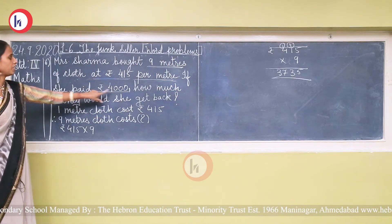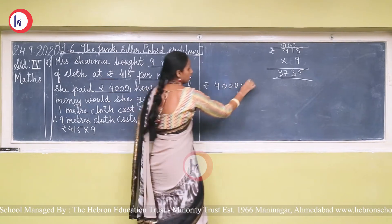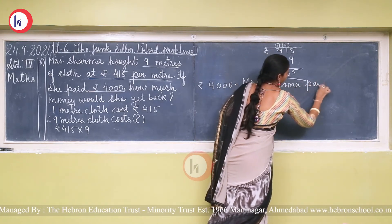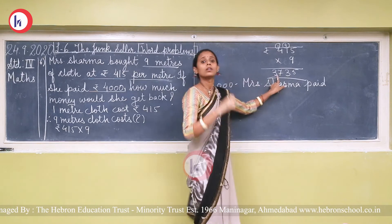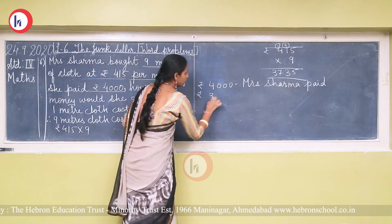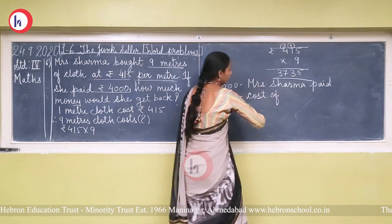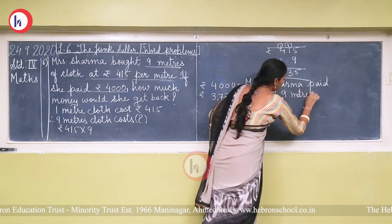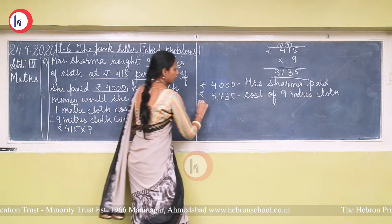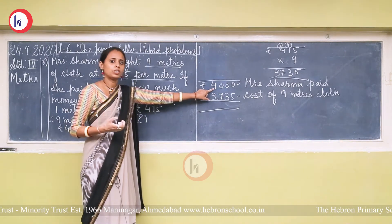Mrs. Sharma paid rupees 4000. The actual cost of 9 meters is rupees 3735. Now we subtract to find how much money she gets back: 4000 − 3735.